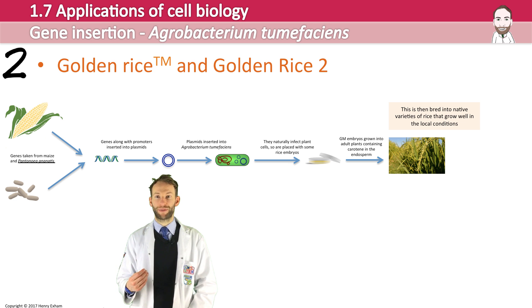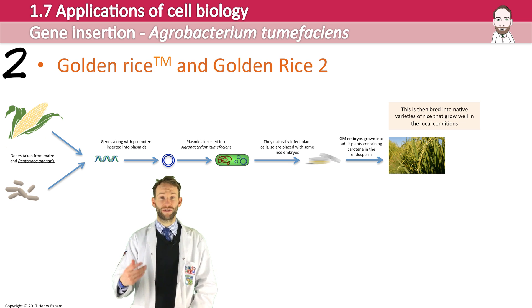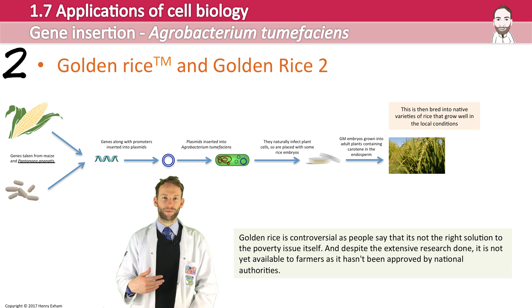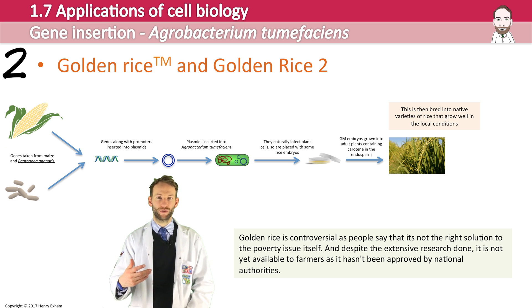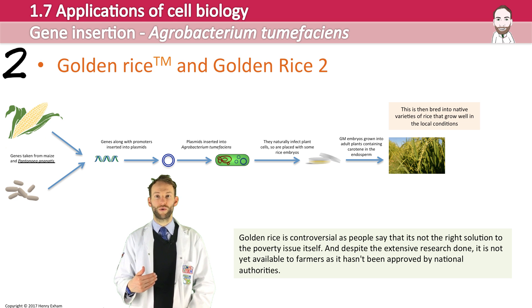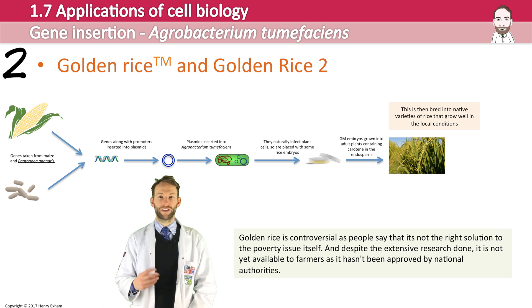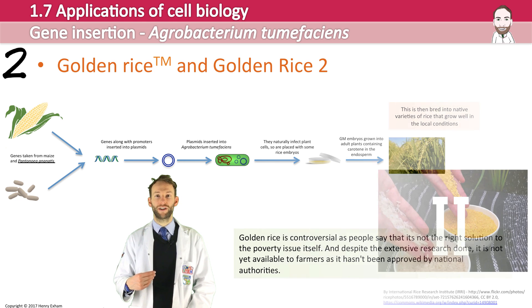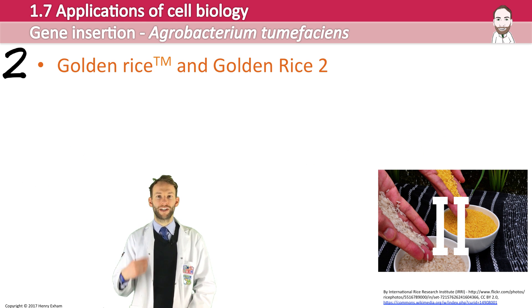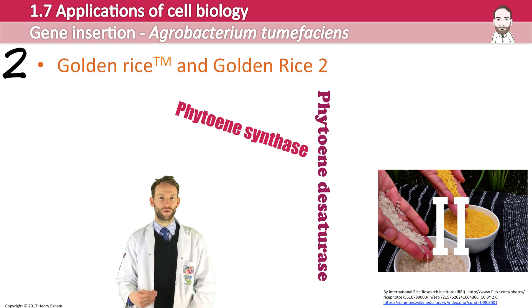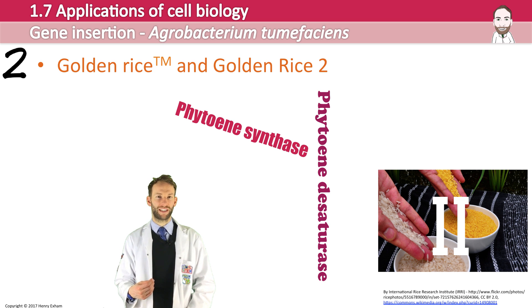Golden rice is controversial, as people say it's not really the right solution to the problem — these are very poor countries and giving them better rice doesn't solve the root issue of poverty. Scientists continued to develop it and made a new variety called golden rice 2, which only requires two enzymes to be inserted: phytoene synthase and phytoene desaturase. This form was found to have an even higher quantity of carotene than the original golden rice.